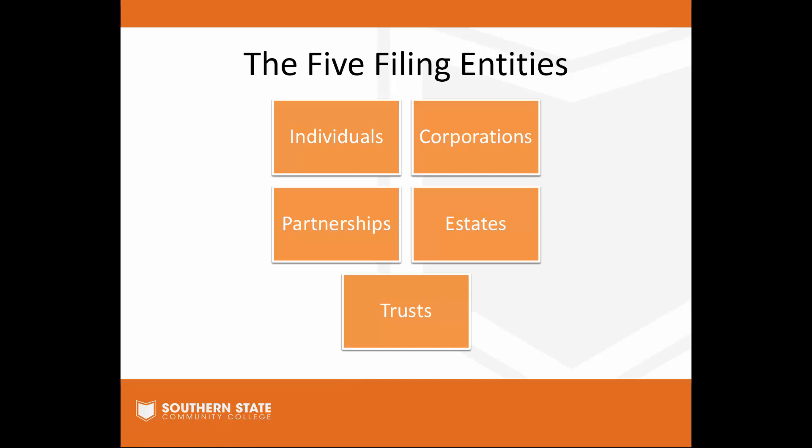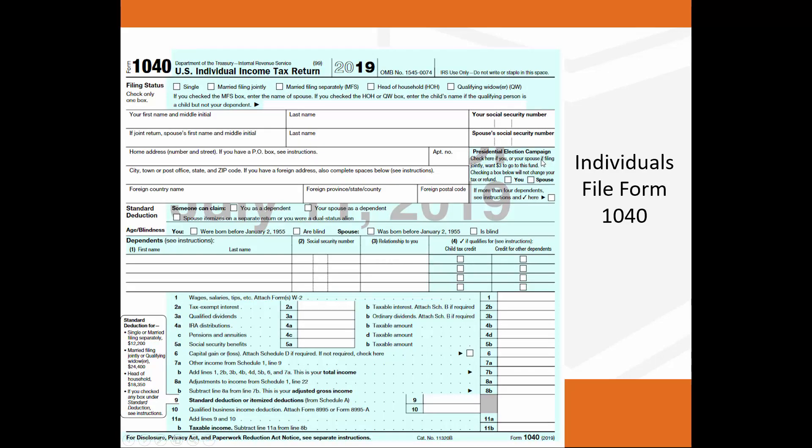Back to the main point: there are five filing entities the textbook talks about — individuals, corporations, partnerships, and estates and trusts. We're focusing most of our class time on individual taxpayers. Individuals file Form 1040. You may remember filing a 1040-A or 1040-EZ, but those forms are gone now. With the Tax Cuts and Jobs Act that went into effect in 2018, those simpler forms were eliminated. The IRS boasted you could fit your return on a postcard — that lasted one year. Now there's just the 1040, which is what we'll be using for 2019 returns filed in 2020.